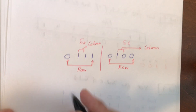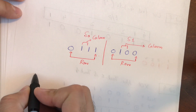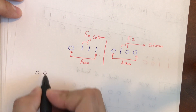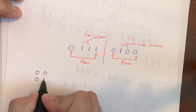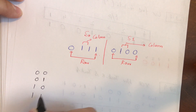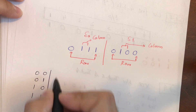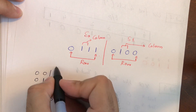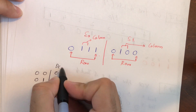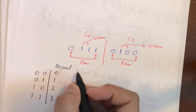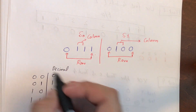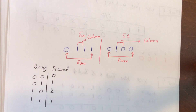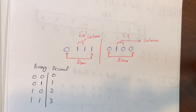Let me write a small binary-to-decimal conversion table for easy reference: 00 = 0, 01 = 1, 10 = 2, 11 = 3. This is straightforward since we only have 2-bit data.